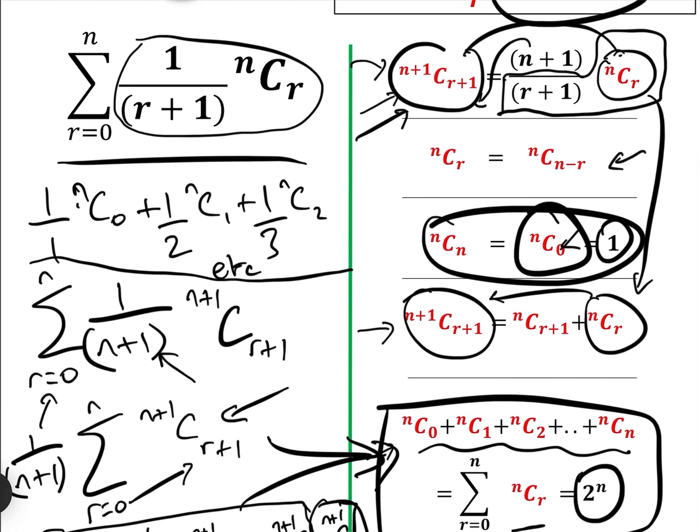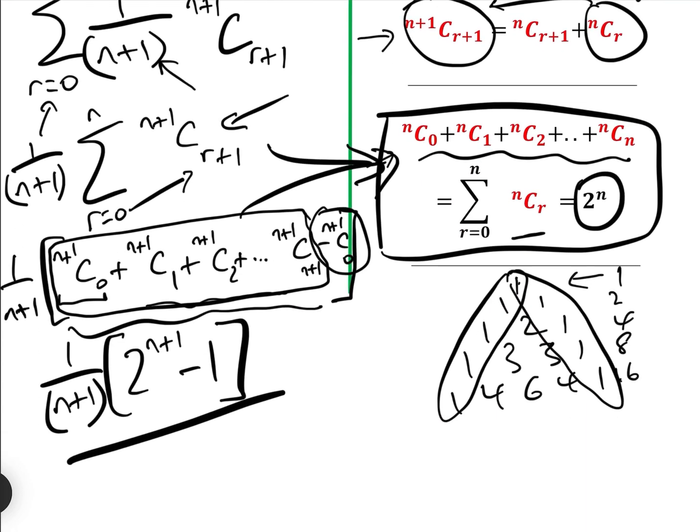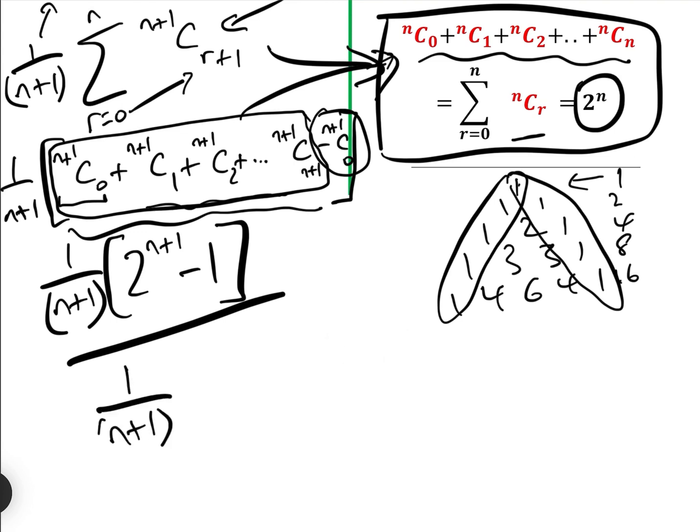OK, so the sum of that rather horrific thing using these formulae is actually very simple to get out. 1 over n plus 1, 2 to the n plus 1, minus 1.